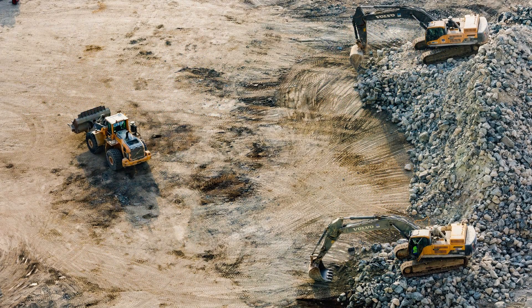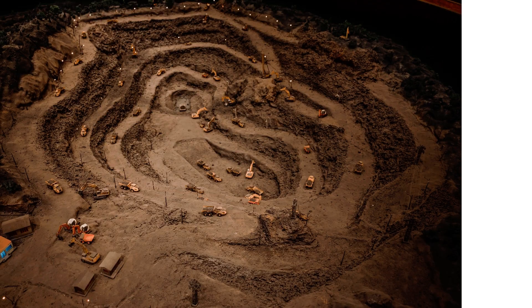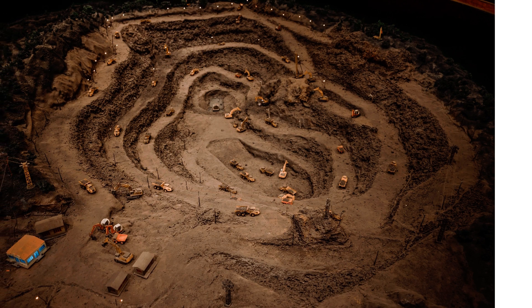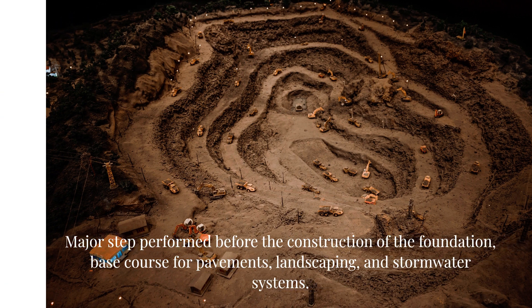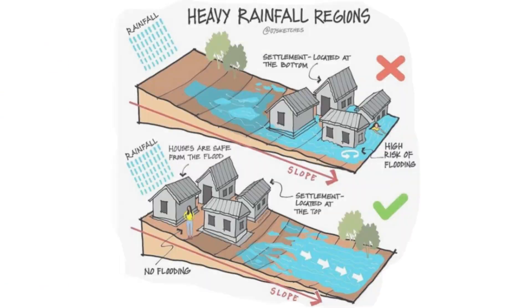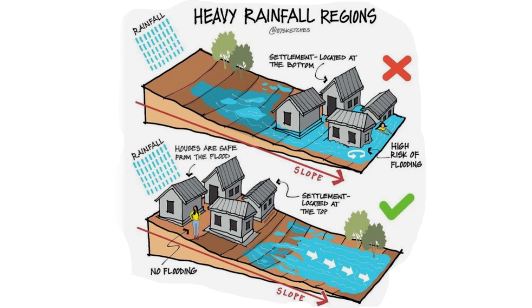Construction grading is achieved either by excavation or backfilling of earth material, by employing special construction grading equipment. It is the major step performed before the construction of the foundation, base course for pavements, landscaping, and stormwater systems. This figure shows how a properly graded construction site helps mitigate drainage or flood issues occurring during heavy rainfall.